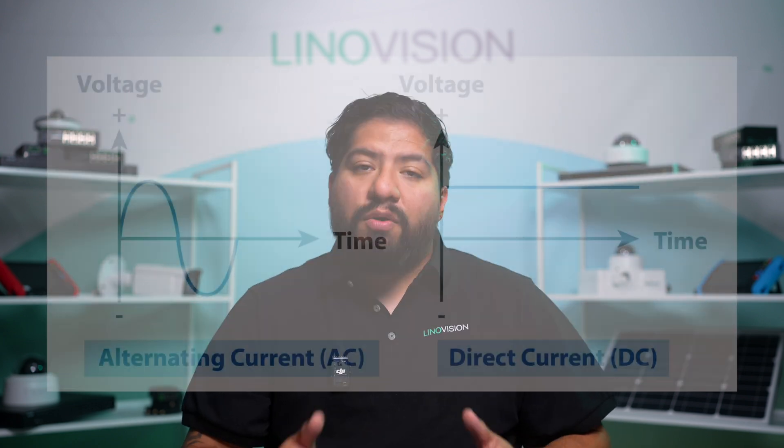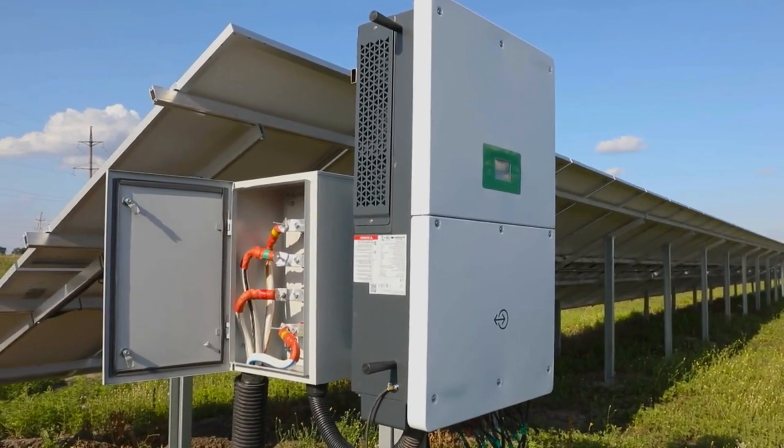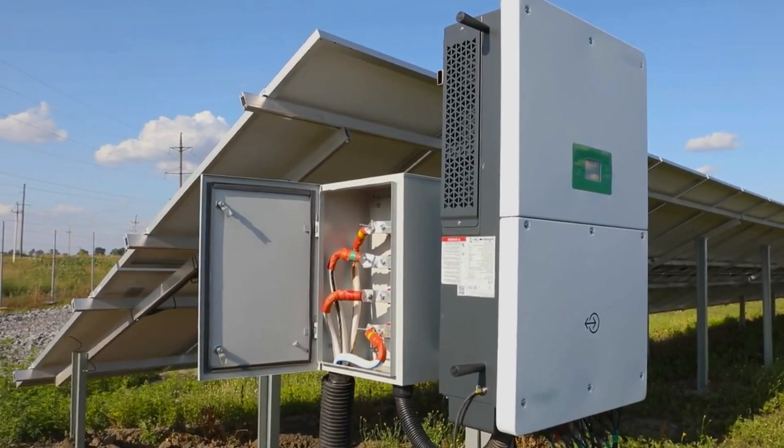You may be asking: what is a power inverter? In simple terms, a power inverter is a device that converts DC, or direct current electricity, into AC, or alternating current electricity. When you have DC power, the electrical current flows in one direction — from sources like batteries and solar panels. AC power, on the other hand, alternates the direction periodically, and this is the kind of power we use in our homes for most appliances.